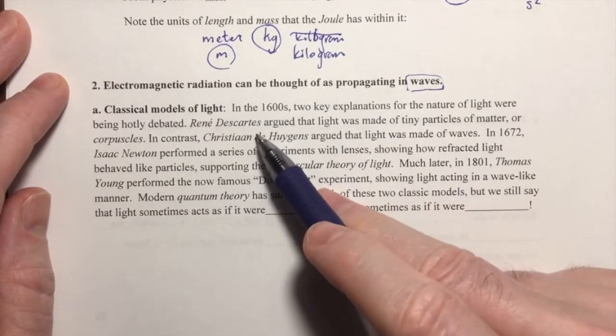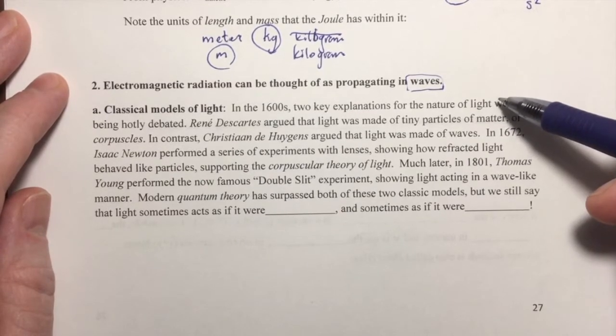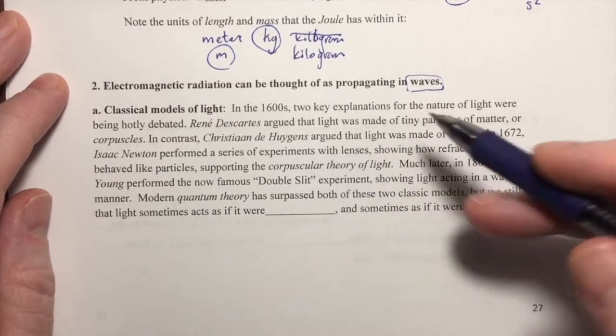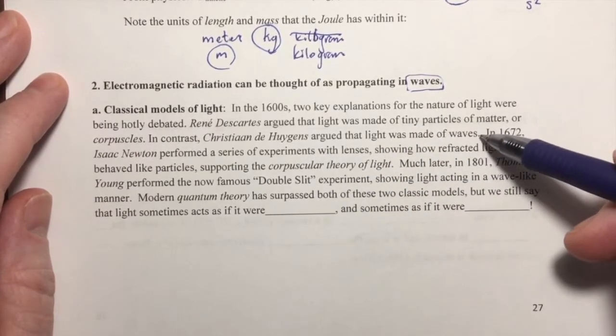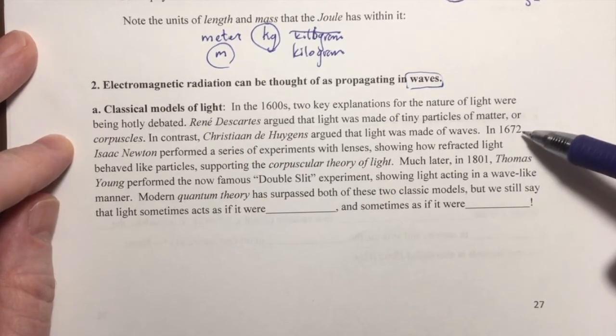Some researchers, like Rene Descartes, said that light was composed of particles, which he called corpuscles. Other researchers, like Christian de Huygens, said that no, light was actually made up of waves. And there were important experiments that supported both of those theories.